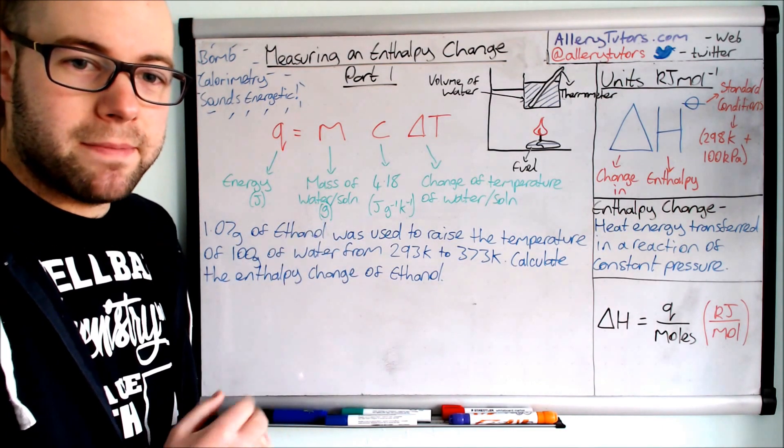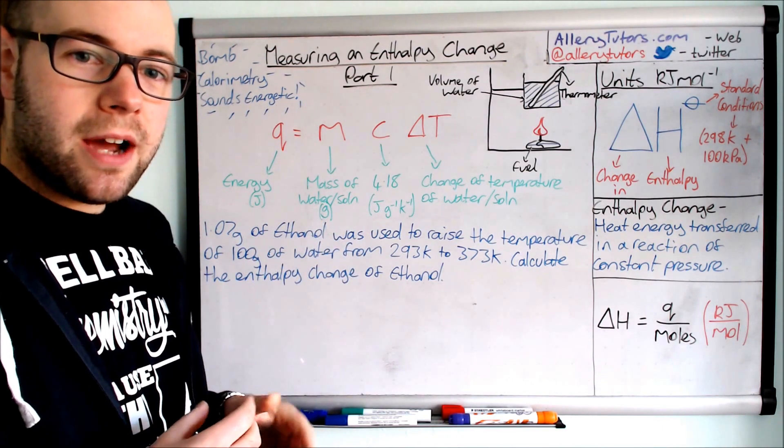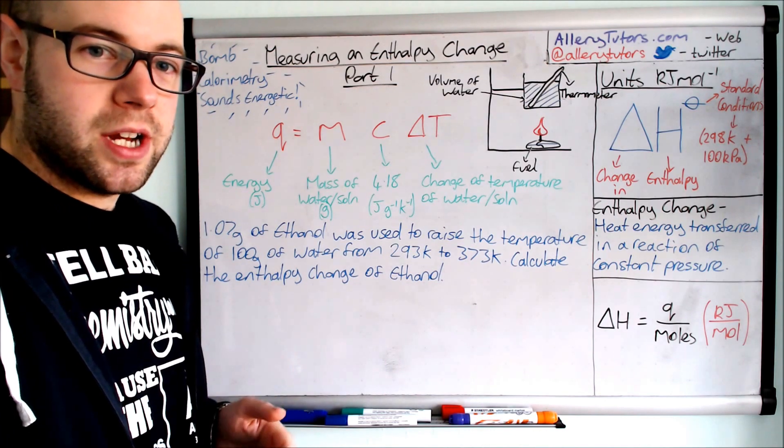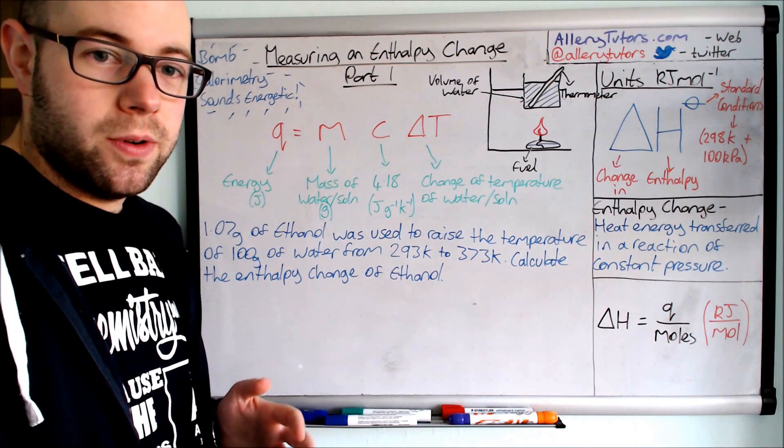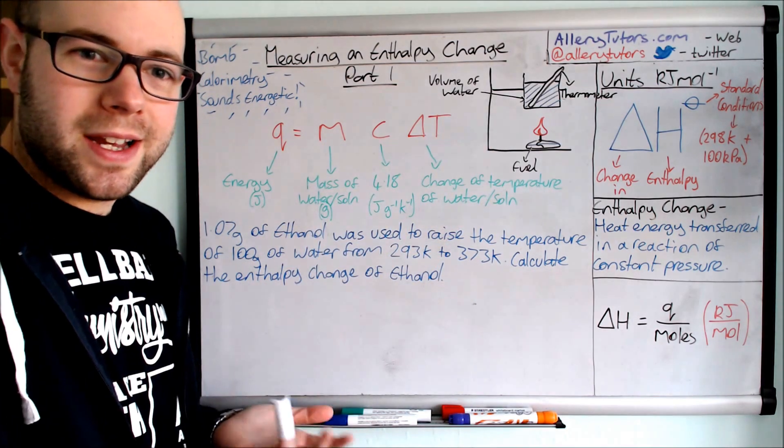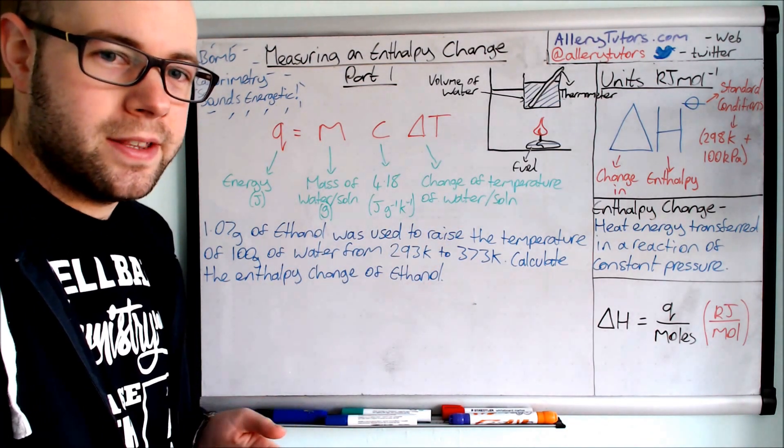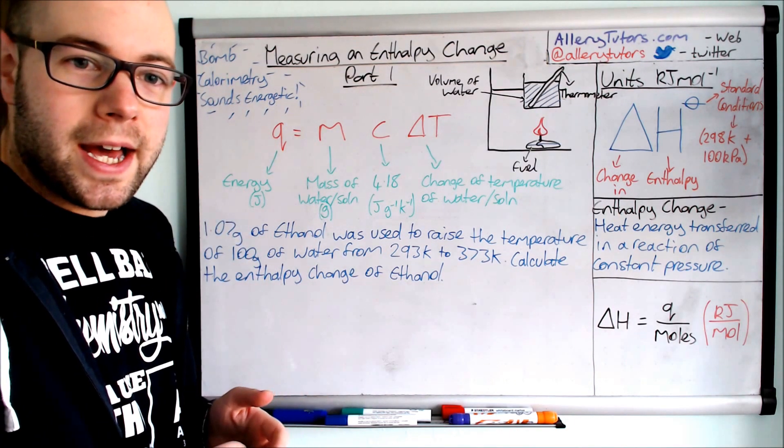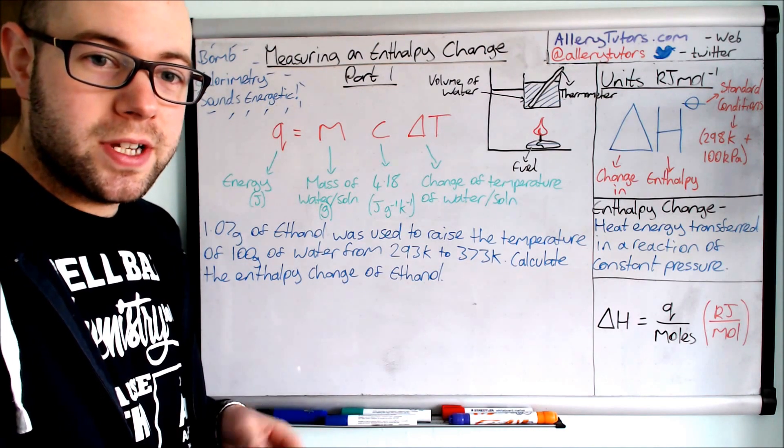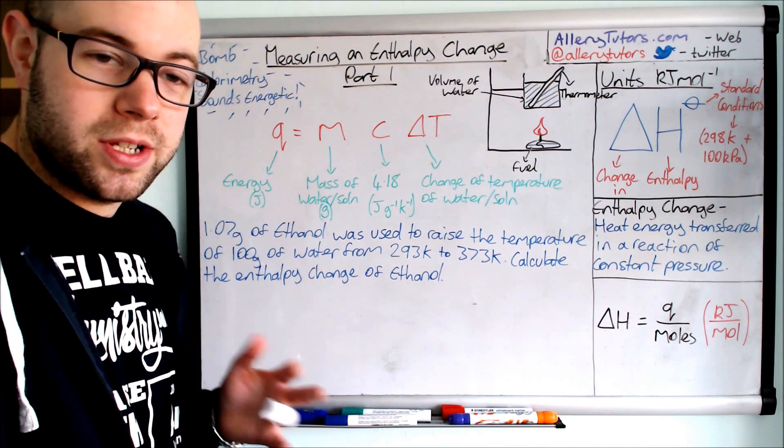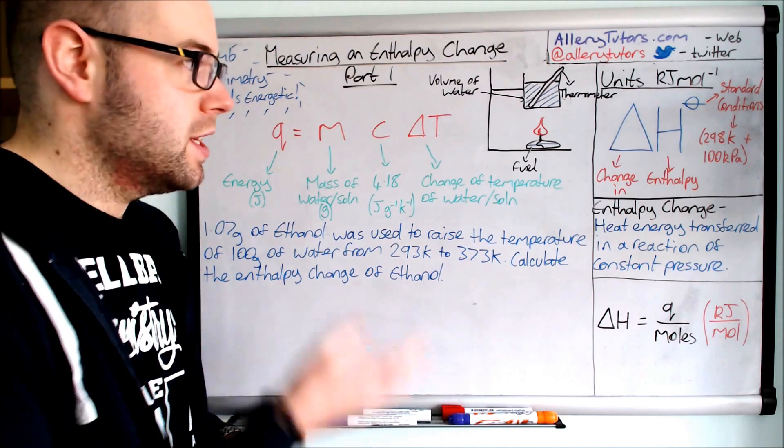Obviously we're going to use this experiment set up here and we're going to use this example question to see how we can use q equals mc delta t to work out the enthalpy change of a fuel when it's heating water. You might think well what's the point in this. This is actually used quite a lot in the food industry when they are trying to use something called bomb calorimetry. This is basically where they take a bit of food, they ignite the food, which obviously turns the energy that's stored in the food into heat energy, and that's used to heat a container of water.